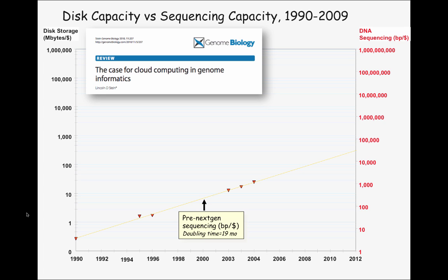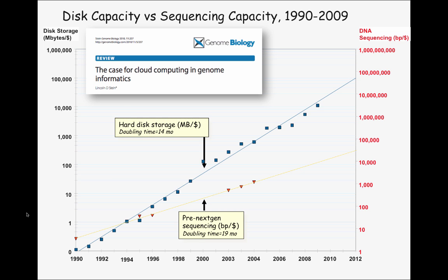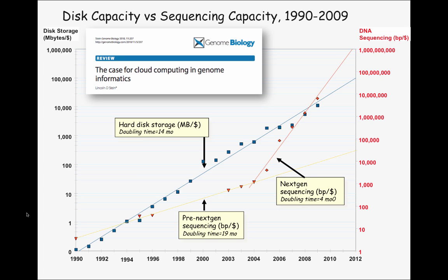This graph was created by Dr. Lincoln Stein, who is the scientific director of OICR. The yellow line shows how many base pairs we can get with one dollar for next-generation sequencing. The blue line shows how much storage we can purchase with one dollar. Storage was cheaper than sequencing, so we had no problem storing sequencing results. But before next-generation sequencing, when next-generation sequencing came up, things changed. Sequencing cost becomes cheaper and cheaper, and this red line shows how many base pairs we can get with next-generation sequencing per one dollar.